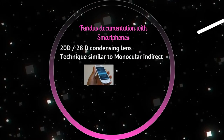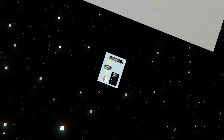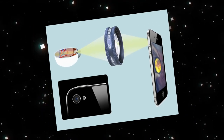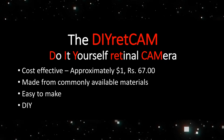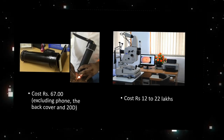Using a condensing lens and a continuously-on flash on the phone, smartphones can be used to capture high-quality fundus images. The optical principle of smartphone fundus photography is similar to monocular indirect ophthalmoscopy. A cost-effective do-it-yourself retinal camera adapter can also be used for fundus photography.